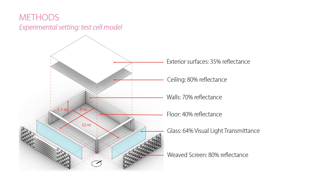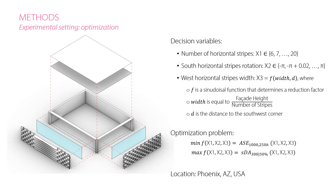This slide presents the geometry of the test model used in the experiments and the optical properties of the surfaces that compose it. The optimization problem has three decision variables: the number of horizontal stripes, the rotation of the south stripes, and the gradient reduction of the west horizontal stripes' width, which is controlled by a specific function.